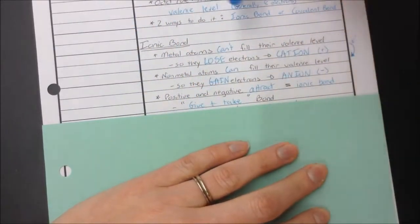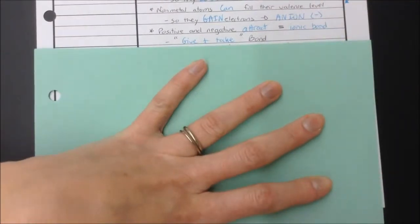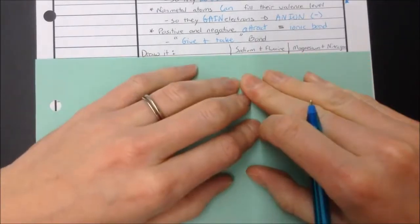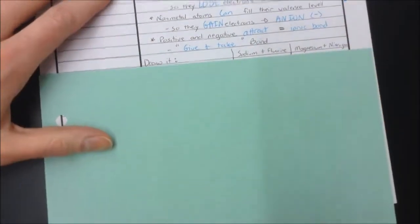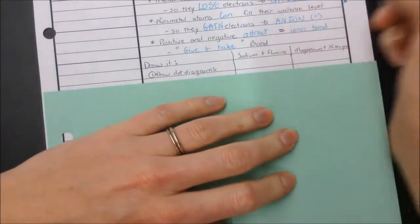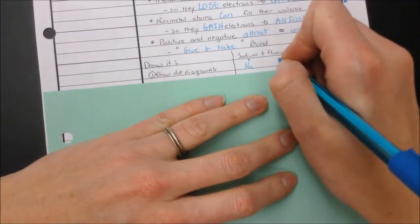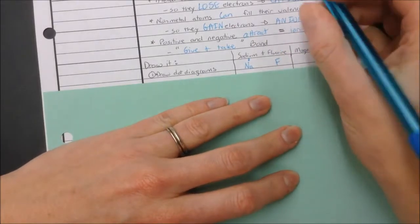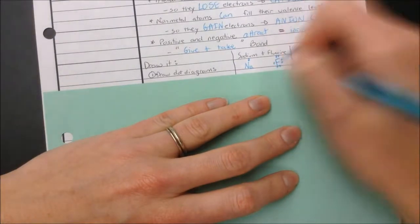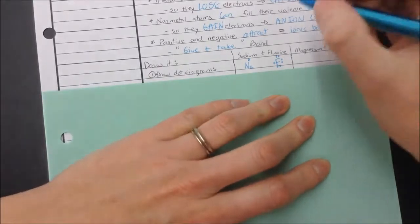When we model these bonds and what's happening to those electrons, we're going to draw it out. I've got two examples that we'll do. The first step is to draw the dot diagrams. Sodium is Na. It's in the first column so it has one dot. Fluorine is F. It's in the second one from the end, which makes it have seven dots. Fluorine has seven, it needs one. Sodium has one to get rid of. How convenient.